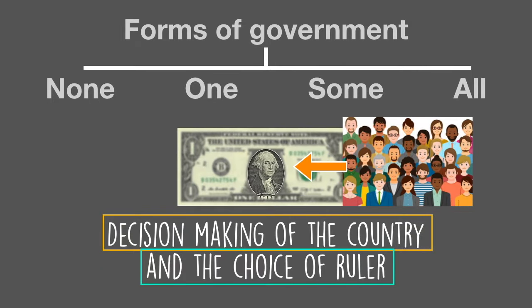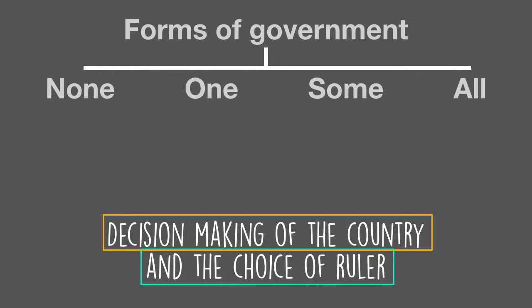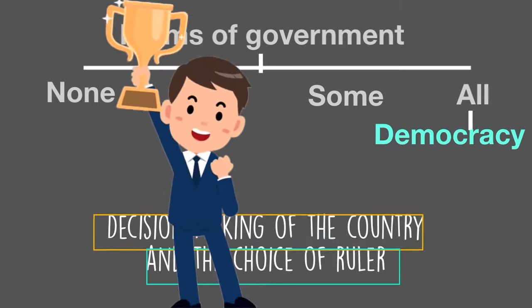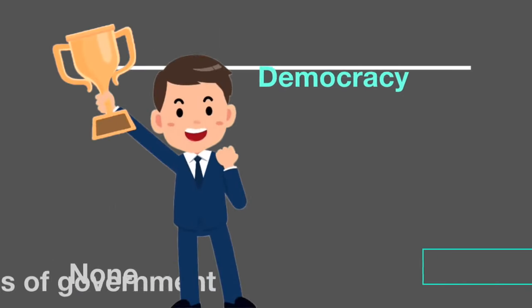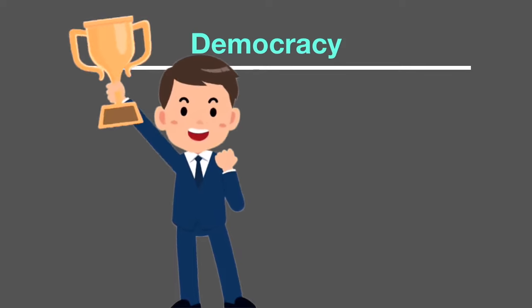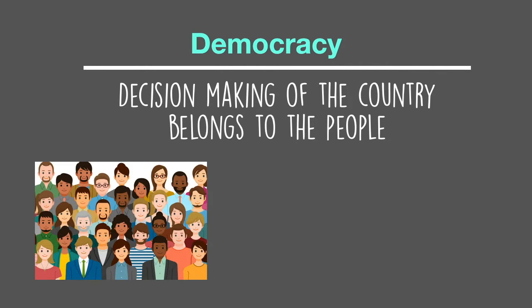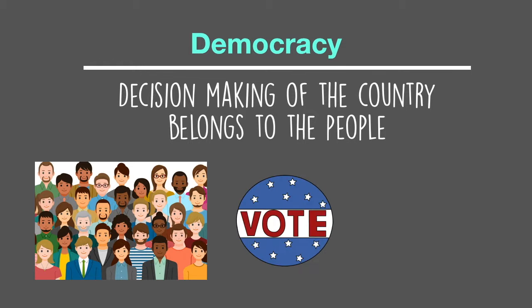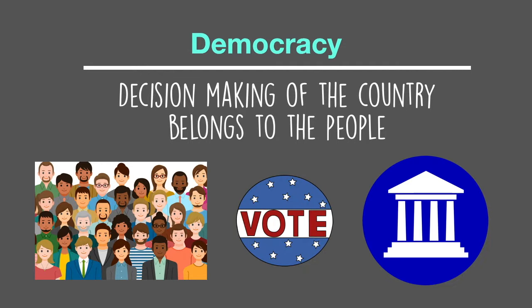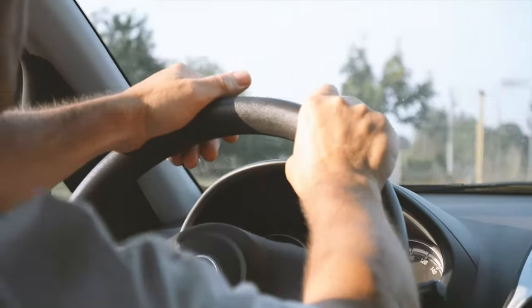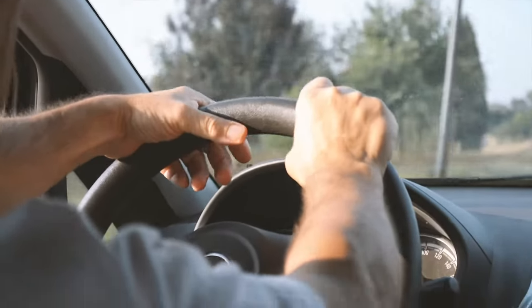We vote for the president. It might not seem like the people have power, but without our vote, they don't get into office. We call this form of government, when everyone has control, democracy — one of the most popular forms of government in the world. Let's formally define it: decision-making of the country belongs to the people, and the people exercise that by voting. Think of voting as a steering wheel — the people can control and steer the government with their vote.